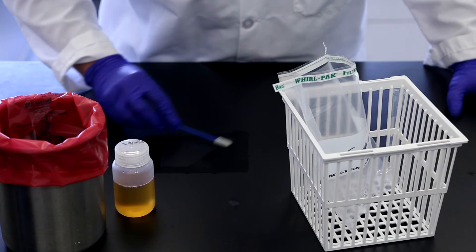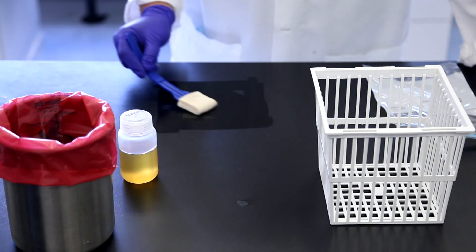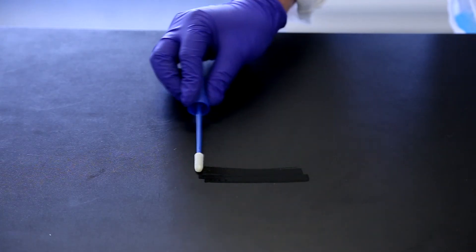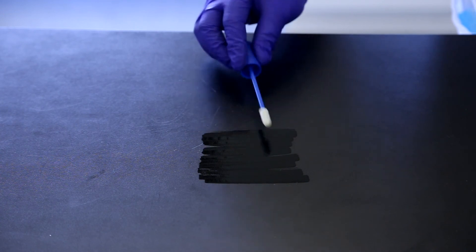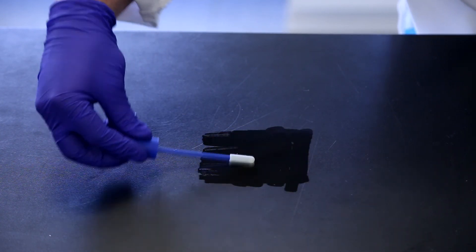You can collect environmental samples using either a swab or a sponge. Please follow manufacturer recommendations for use of sponges and swabs. Collect your sample by moving the swab or sponge horizontally, vertically, and then diagonally across the area to effectively recover any organisms.